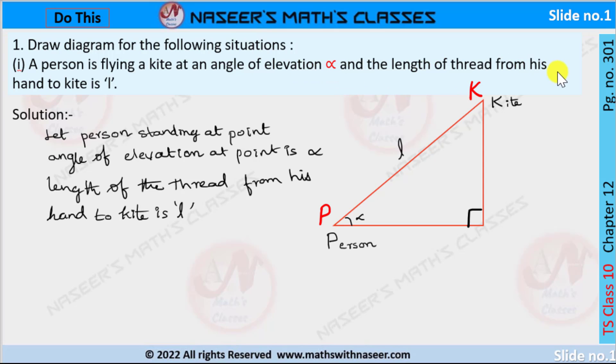And length of the thread from his hand to kite is l. According to the given data, a person is standing at a point P making an angle of elevation with kite at point K. The length of the thread is l.